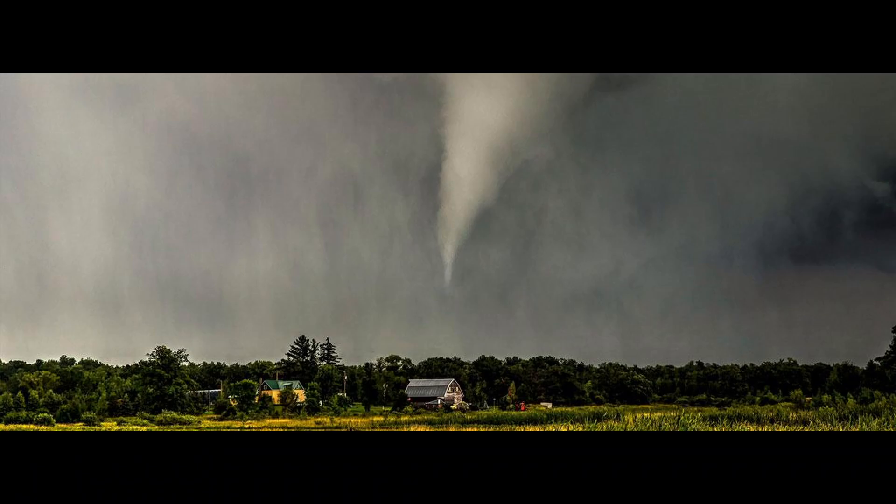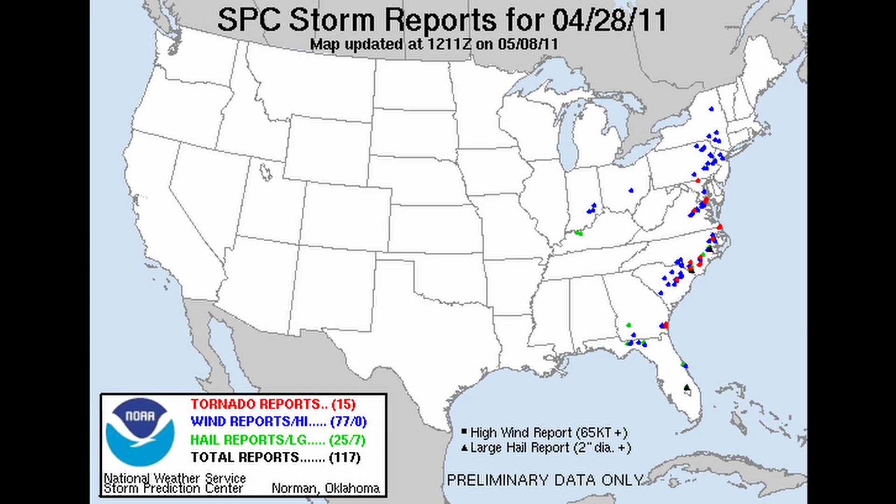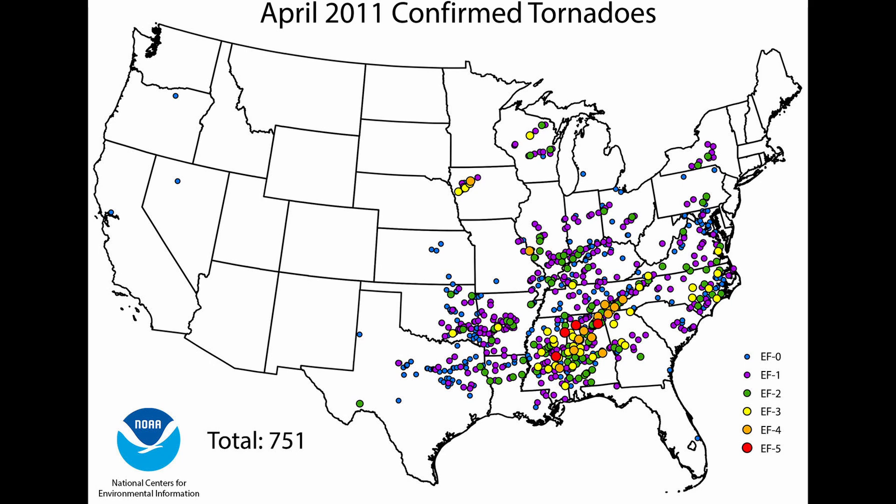The tornadoes were also traveling at high speeds, increasing their lethality. By the end of April 27th, the death toll had soared to 316 people, making it the deadliest day of tornadoes in the U.S. since the 1925 Tri-State Tornado. Though the storm system began to weaken by April 28th, tornadoes continued to form in the Carolinas and Virginia, but were generally less intense. The last confirmed tornado touched down in Virginia. In total, the four-day event produced 360 tornadoes, with the majority occurring on April 27th.